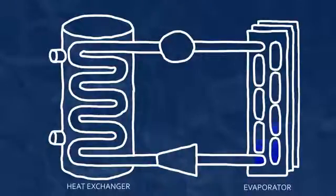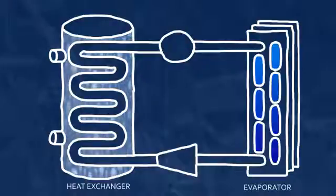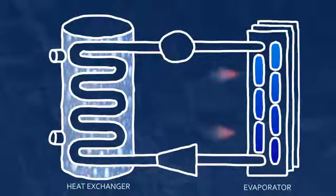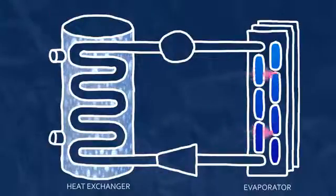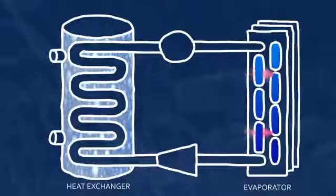In the beginning of a cycle, the refrigerant is in a cold, low-pressure, liquid gaseous state flowing through tubes that are exposed to room air. It is colder than the room air, so the heat in the air moves to the refrigerant. This is because heat always wants to move from warmer things to cooler things.